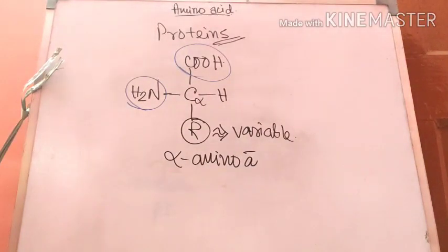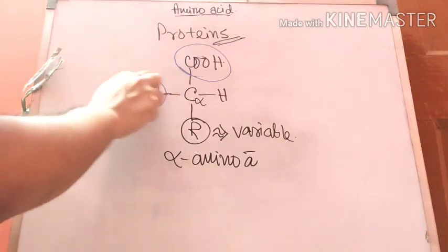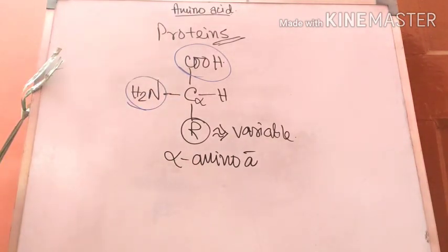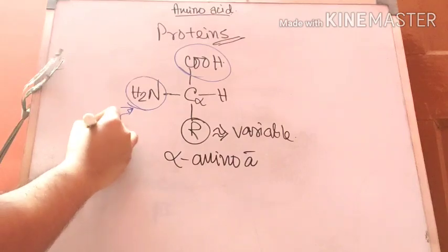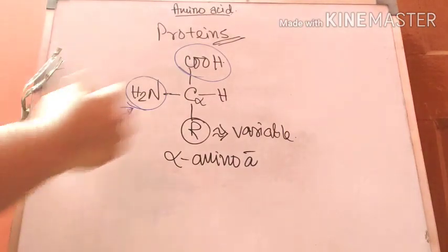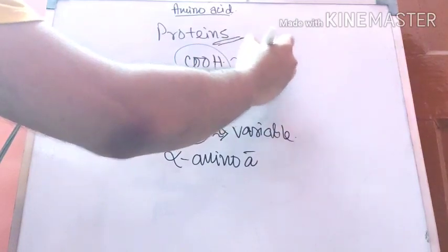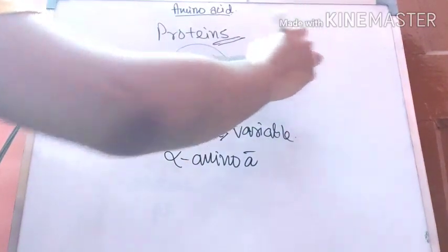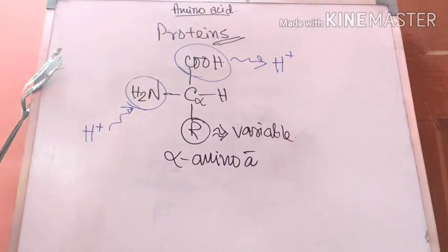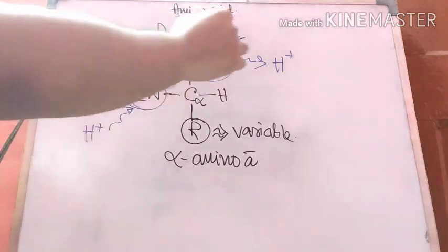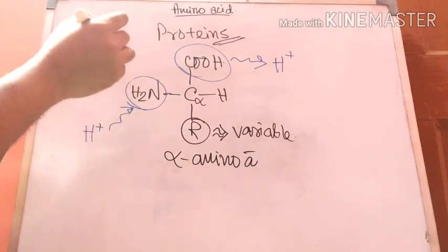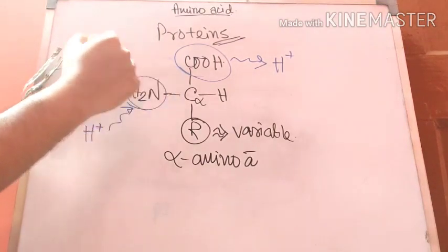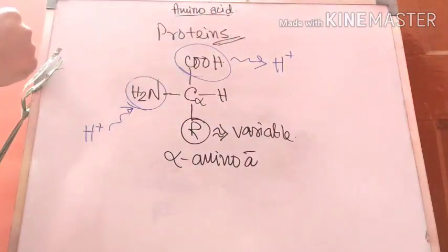As you can see, there is a basic amino group which can receive protons, whereas the COOH carboxylic acid group can donate protons. At a specific pH, the carboxylic group can donate protons and the amino group can accept them, so the amino acid can behave like a base or an acid under particular circumstances.